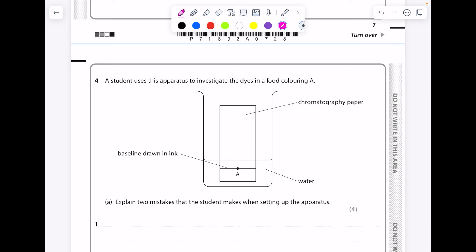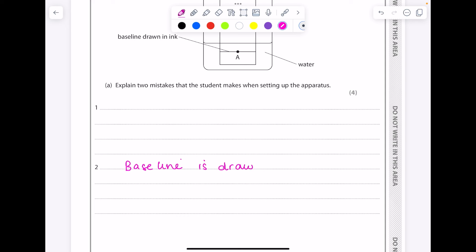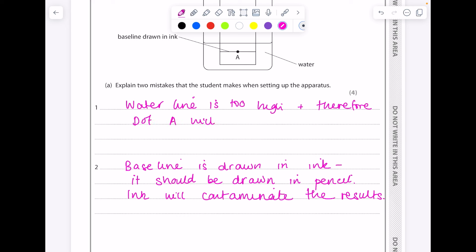A student uses this apparatus to investigate the dyes in Food Coloring A. Explain two mistakes that the student makes when setting up the apparatus. Straight away I can see the solvent, the water, is way too high. It needs to be beneath the reference line. And the baseline needs to be drawn in pencil because you need something insoluble. So ink will contaminate the results. Water line is too high and therefore dot A will dissolve in the water, which you don't want to happen.